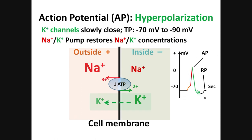In this last stage, potassium channels are closing slowly. The movement of potassium out of the cell makes the TP even more negative than it used to be, as it goes from minus 70 to minus 90. We call this change hyperpolarization. This makes sense as well: polarization is minus 70, but hyperpolarization is minus 90 — more negative than before. Then the sodium-potassium pumps restore the original sodium and potassium concentrations. The TP gets back to the resting level and a new action potential can be generated.